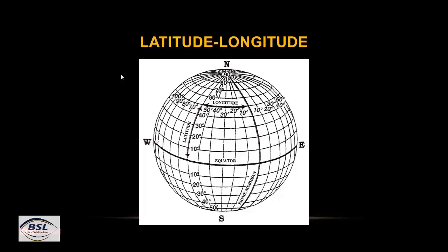From the equator we can measure latitude distance above and below. From the prime meridian we can measure longitude distance to the right or left. The area above the equator is called the northern hemisphere, below is the southern hemisphere. To the right of the prime meridian is the eastern hemisphere, and to the left is the western hemisphere.